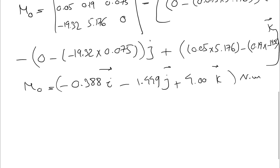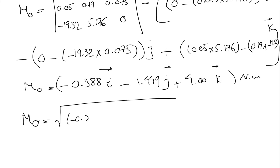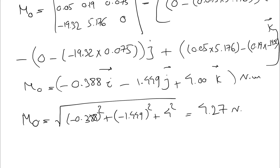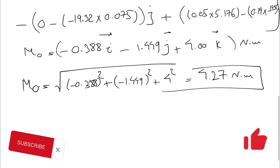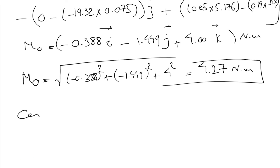Now we need to find the magnitude of the moment. The magnitude is the square root of the sum of squares: square root of minus 0.388 squared plus minus 1.449 squared plus 4.0 squared. Calculating this gives us 4.27 Newton meters as the magnitude of the moment.